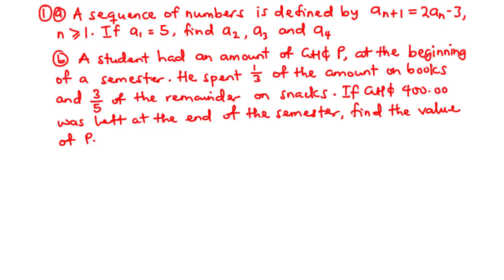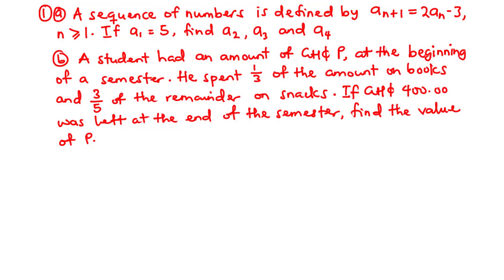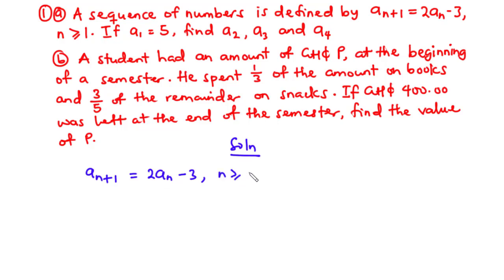Now let's solve question 1a. A sequence of numbers is defined by a_(n+1) equals 2 times a_n minus 3, where n is greater or equal to 1.